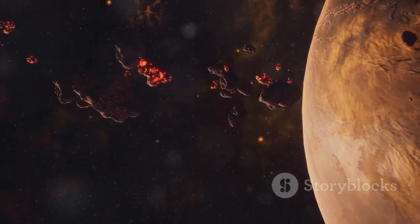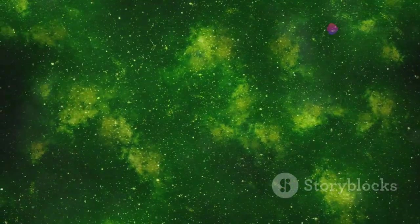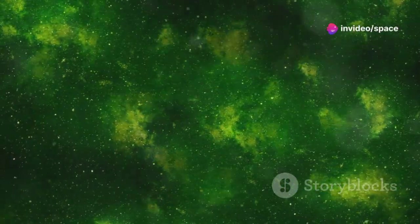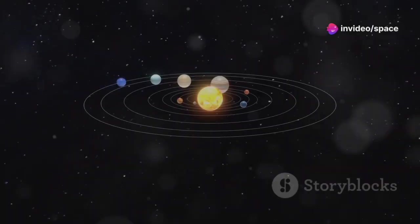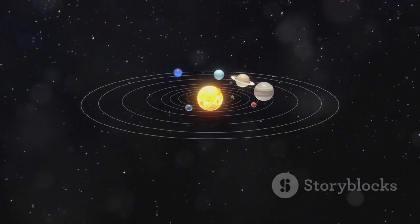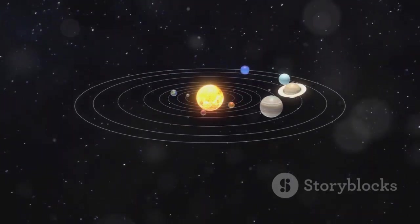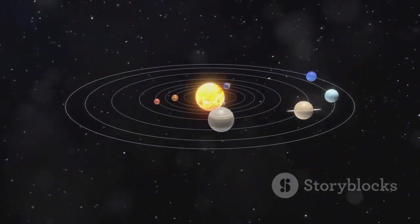For centuries, we believed that our solar system, with its familiar planets orbiting a single star, was the standard. We thought this was how planetary systems were meant to be. Our understanding was limited to what we could observe with the naked eye and early telescopes. The solar system appeared orderly, predictable, and unique.